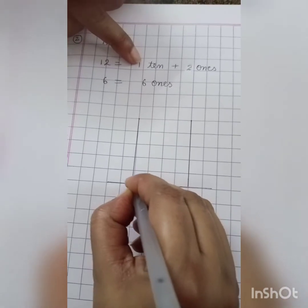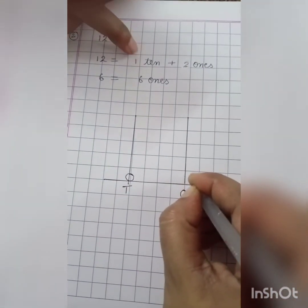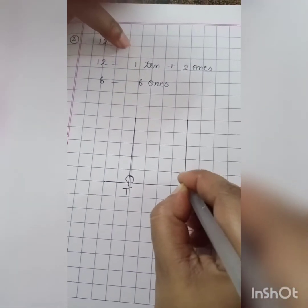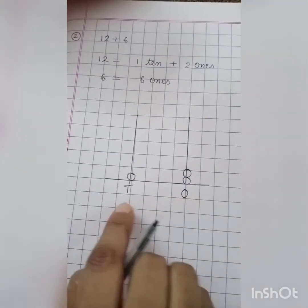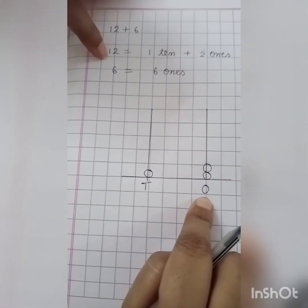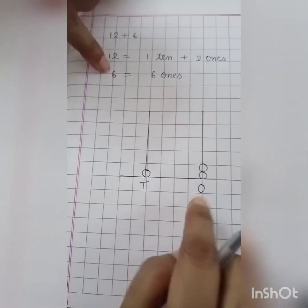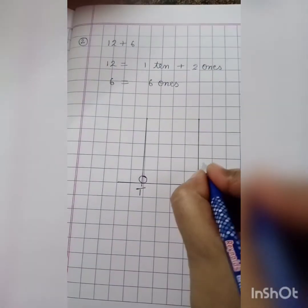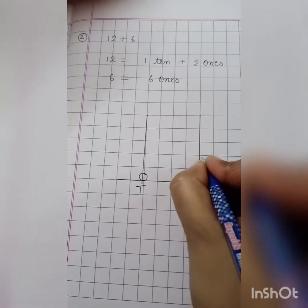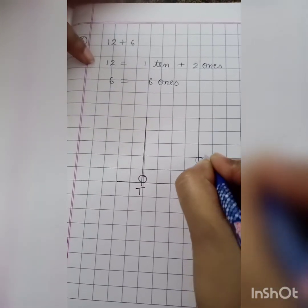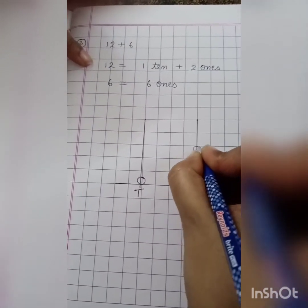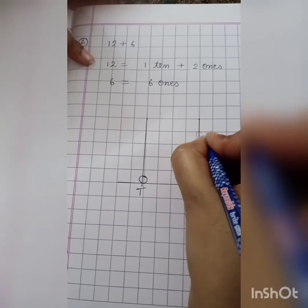So 1 ten on tens spike and 2 balls on ones spike. This is number 12. Now what to do next? Now I have to draw 6 balls on ones spike, 1, 2, 3, 4, 5 and 6.